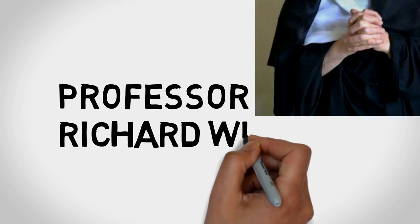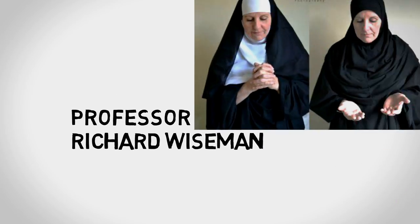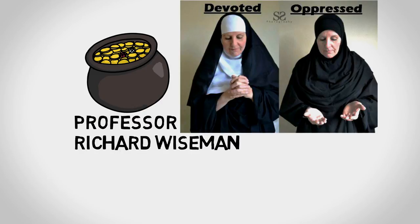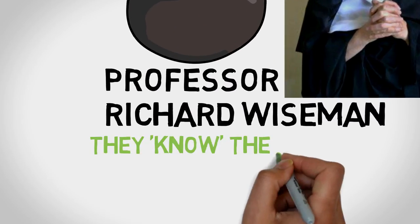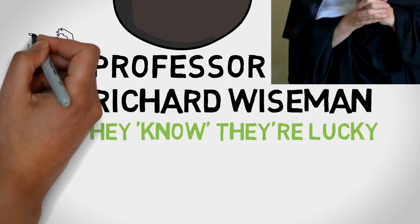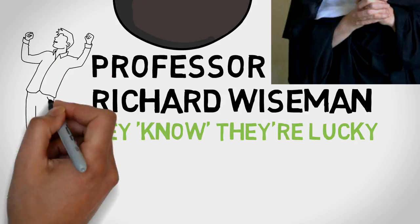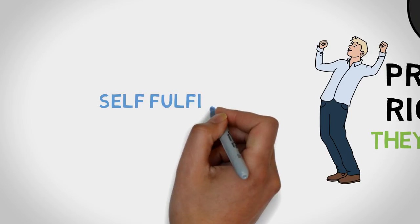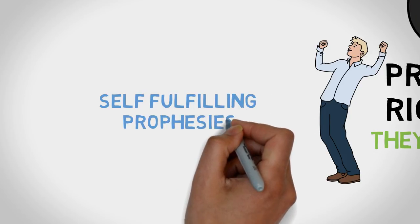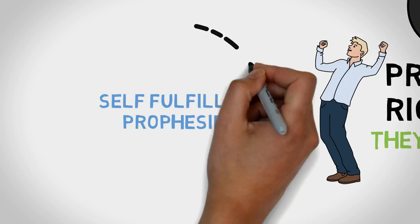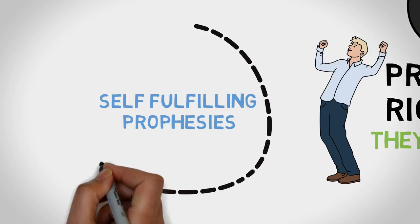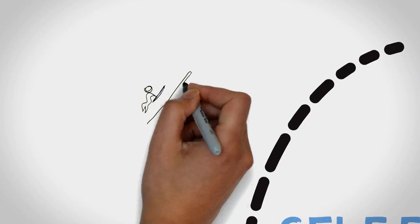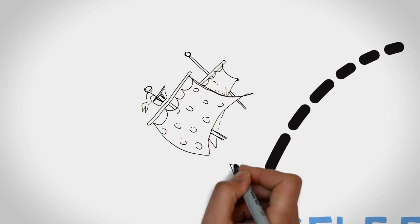Professor Richard Wiseman has been researching luck for over a decade. He says in their minds they know they're fundamentally lucky. These assumptions become expectations which in turn become self-fulfilling prophecies. Because lucky people expect things to work out in their favour in the end, when ill fortune comes their way they reframe it or just ride it out till it turns back in their favour.